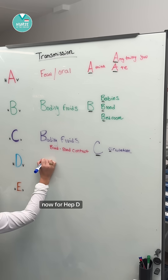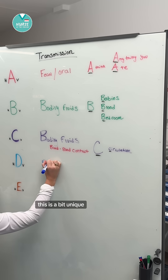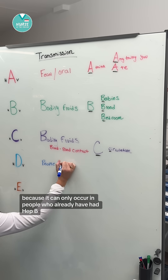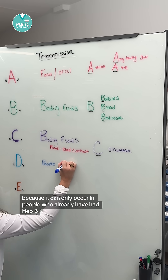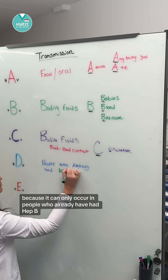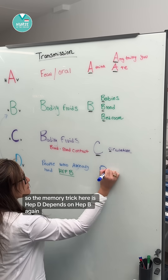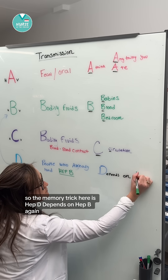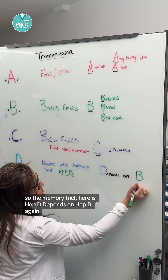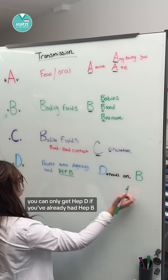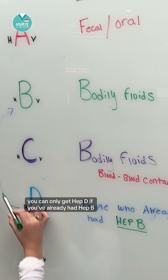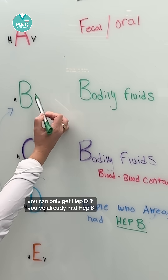Now for hep D — this is a bit unique because it can only occur in people who already have hep B. The memory trick here is hep D depends on hep B. You can only get hep D if you've already had hep B.